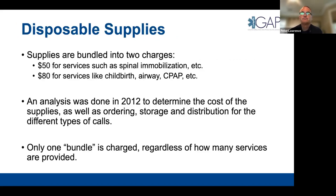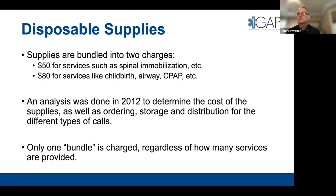Disposable supplies are bundled into two charge categories. In 2012 we analyzed the supplies used across different call types — spinal immobilization, childbirth, airway, CPAP, et cetera — and bundled them rather than itemizing, since itemizing drives insurance companies crazy and creates a tremendous amount of work for billing. Only one bundle gets charged regardless of how many services are provided. For example, we recently had a cardiac arrest patient who was pregnant and gave birth — we charged only one supply bundle.